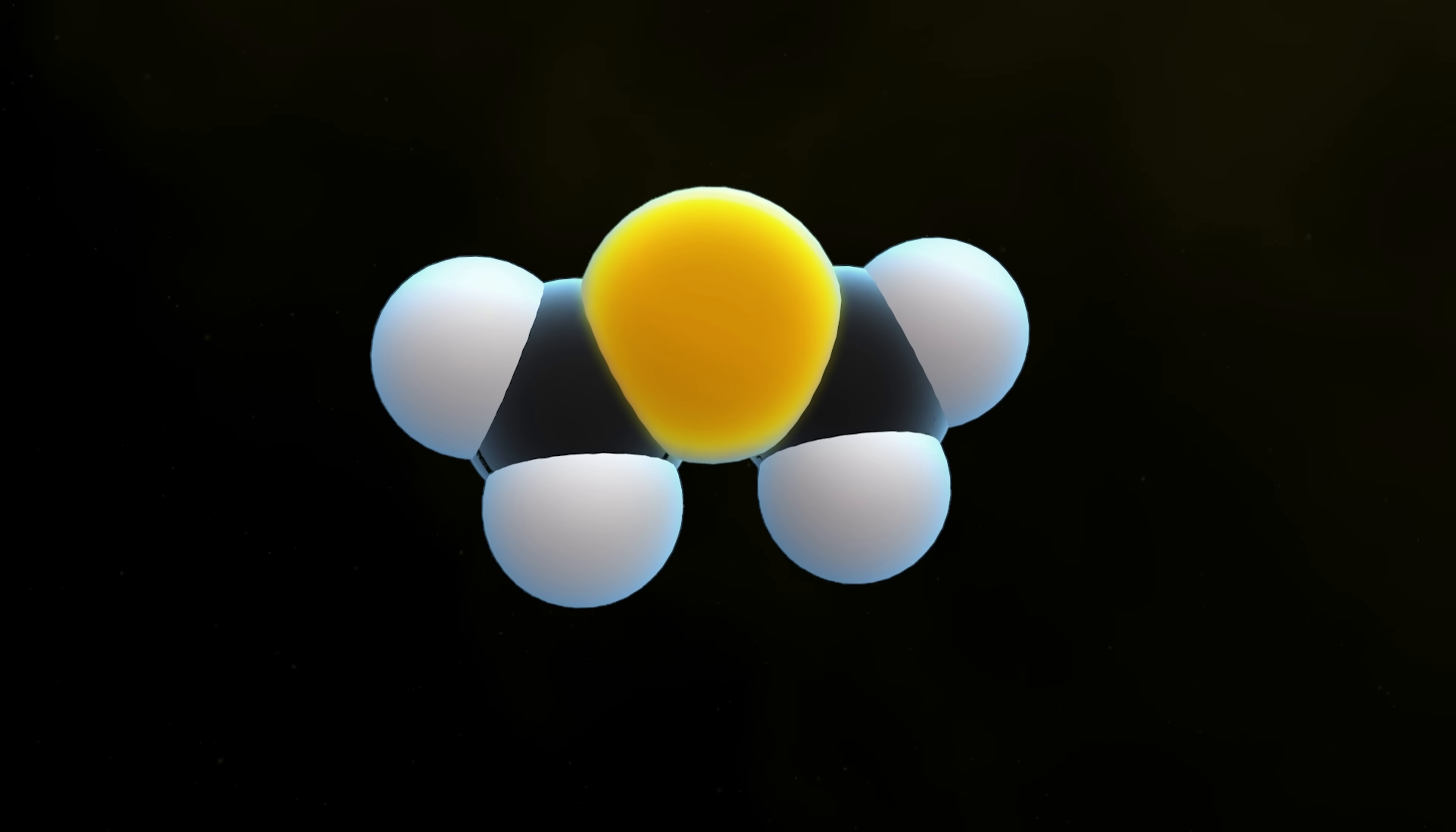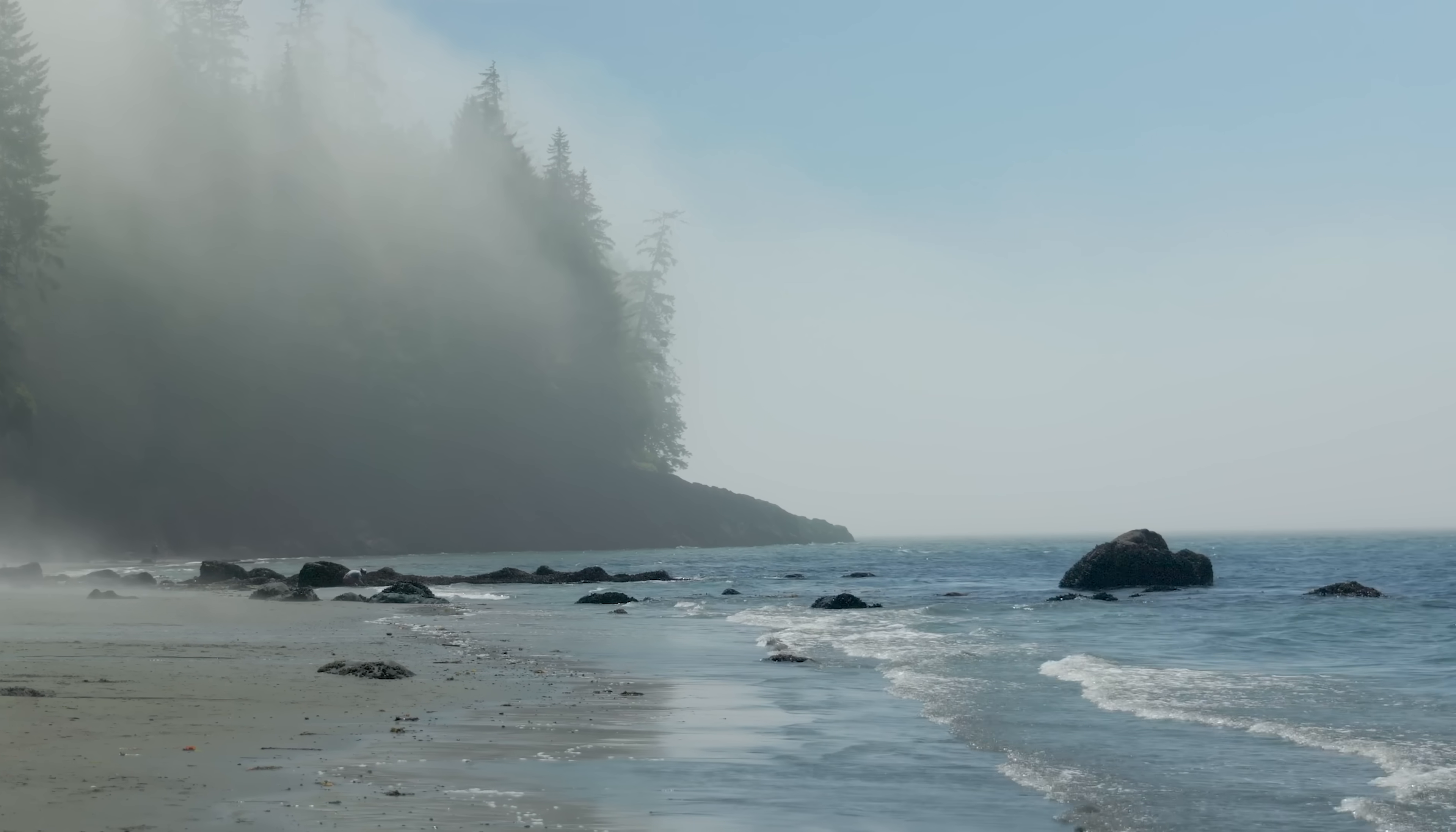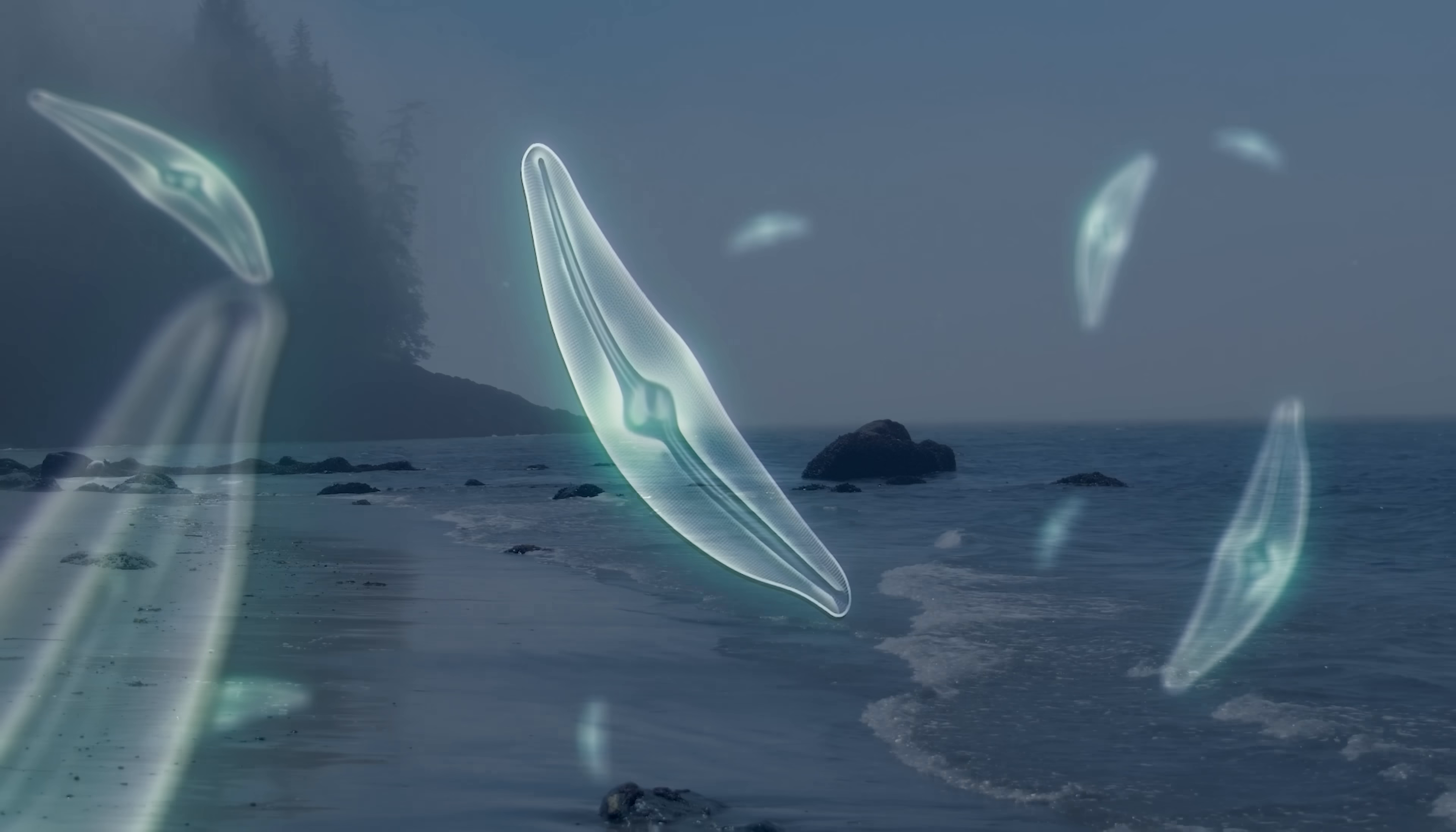First of all, what even is DMS? This molecule, made up of two methyl groups bonded to a sulfur atom, is probably one of the first things you smell when you step onto the beach. It's a natural byproduct that comes from the metabolism of phytoplankton, which are microscopic algae that grow in the ocean.